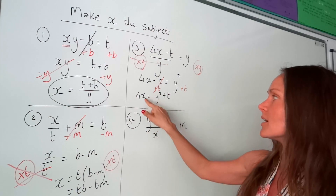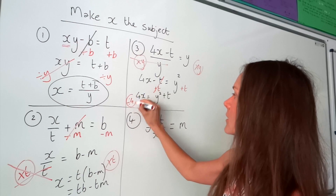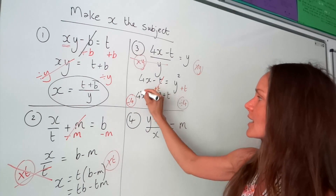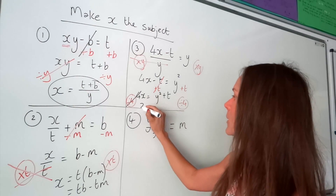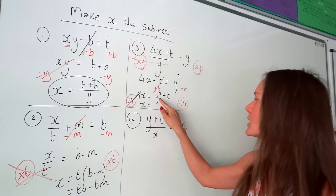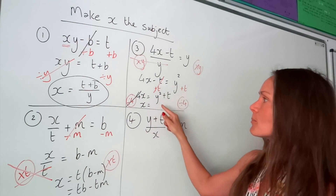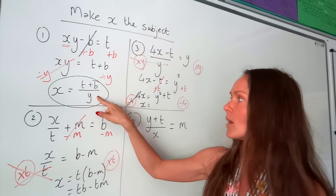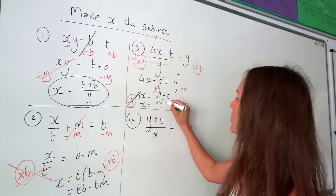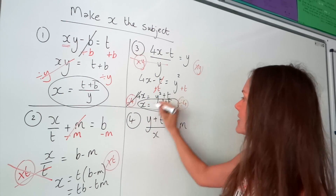The opposite of multiplying by 4 is to divide by 4. On the left-hand side, 4 divided by 4 is just 1, so they cancel and we're left with 1x. On the right-hand side, be careful — we're dividing everything by 4. Just like in question 1, the nicest way is to write it as a fraction: y squared plus t, all divided by 4. That's number 3.